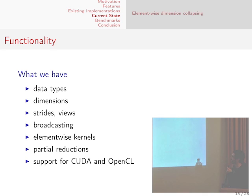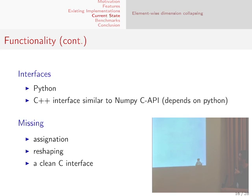What we have right now: we support all sorts of data types like integers, floats, doubles, and others; any number of dimensions; strides and views; broadcasting; element-wise kernels; and some support for reduction, though it's not complete yet. All of these are supported on both CUDA and OpenCL. We also have a Python interface and a C++ interface similar to the NumPy C API, but it currently depends on Python — this will need to be cleaned up so it can be used not only in Python, but also in Ruby, Lua, or Torch. We are currently missing assignment of a submatrix or element, reshaping of matrices, and a clean C interface.